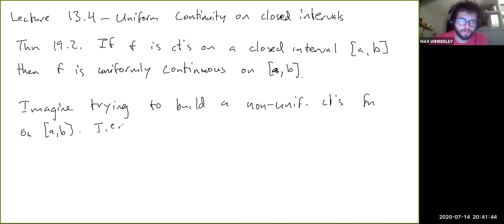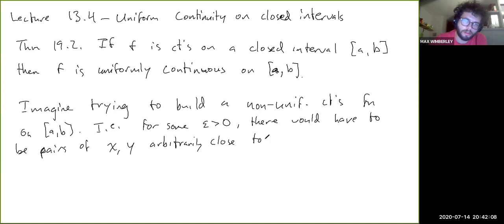The way we would have to do this is, for some epsilon greater than 0, there would have to be pairs of x and y arbitrarily close together such that f of x minus f of y is greater than epsilon. Absolute value, obviously.